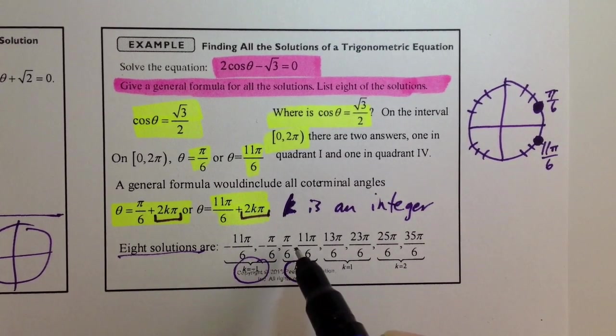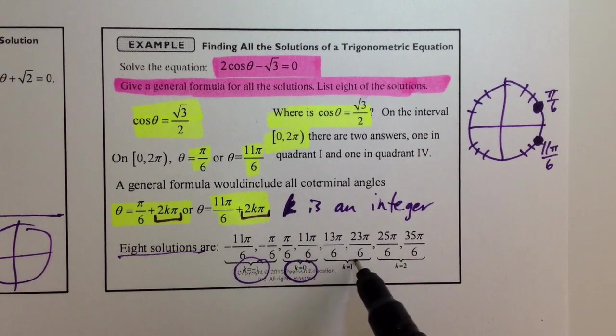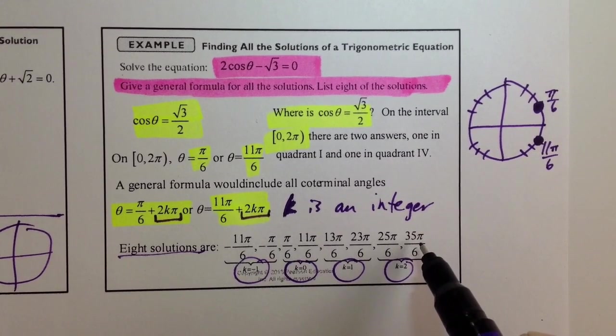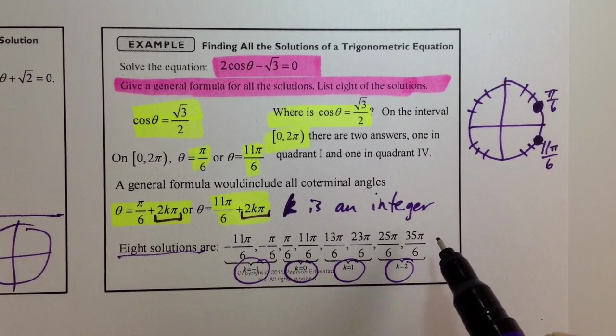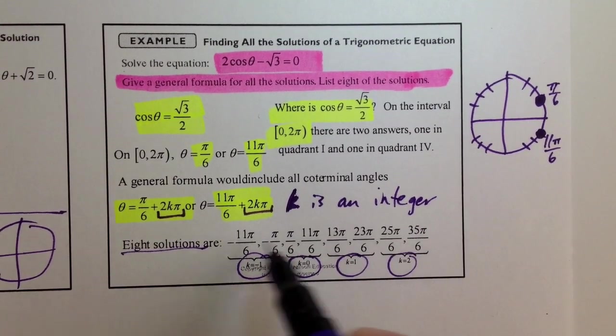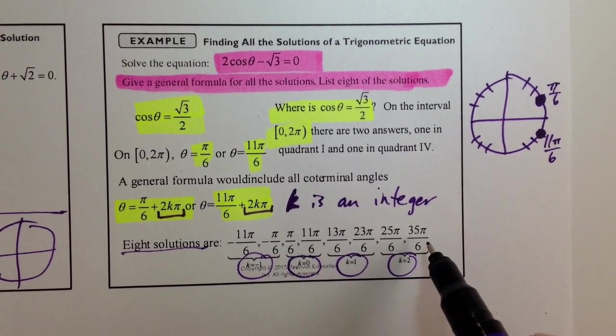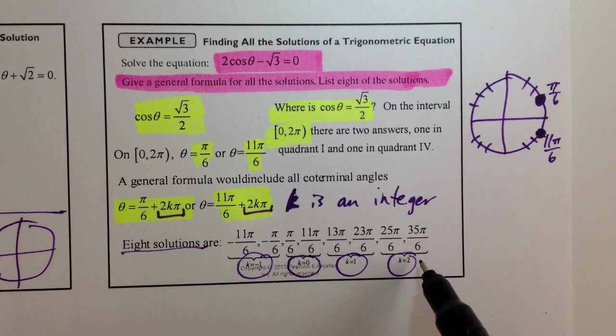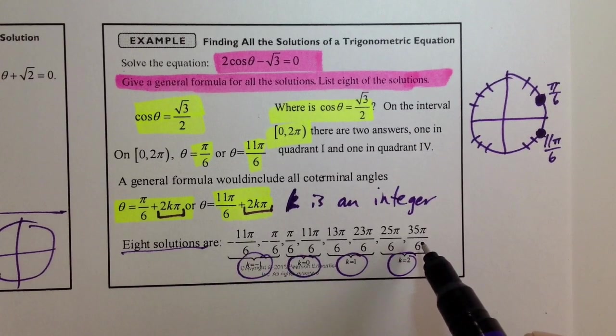When k is equal to 0, we get the original two angles. k is equal to 1, we get these two. When k is equal to 2, we get these two. Now, this is only 8 of the infinite number of solutions, but it hopefully gives you a clear idea of why, of what that k and how that k changing affects the solutions that we get.